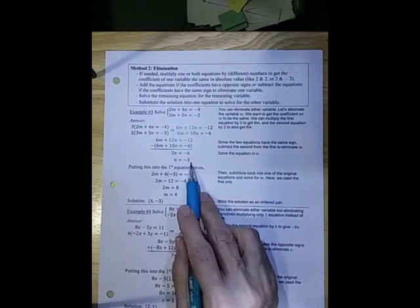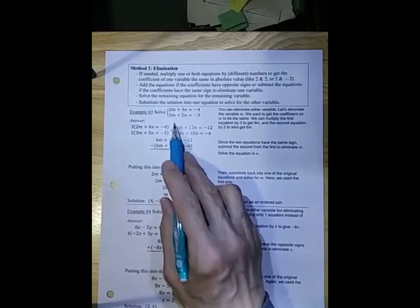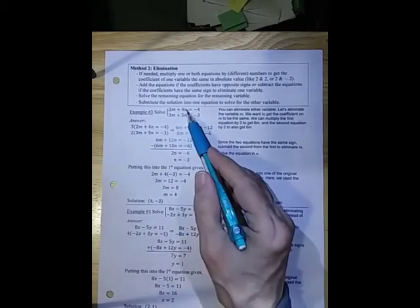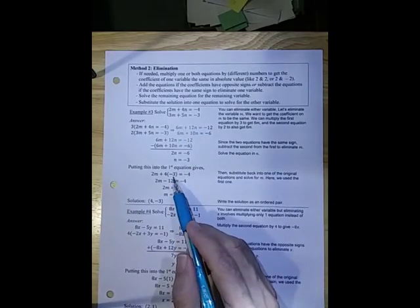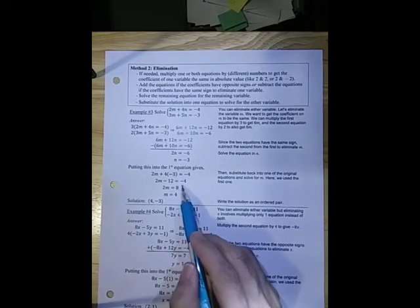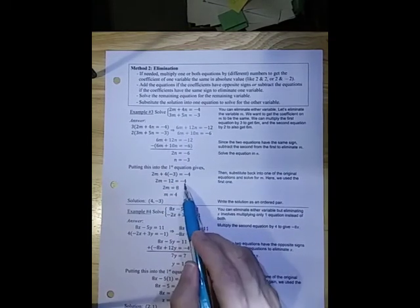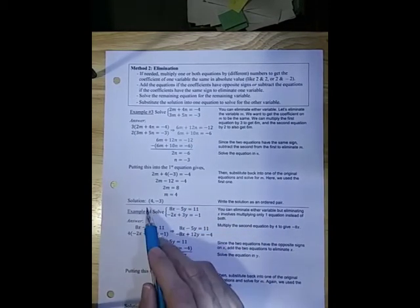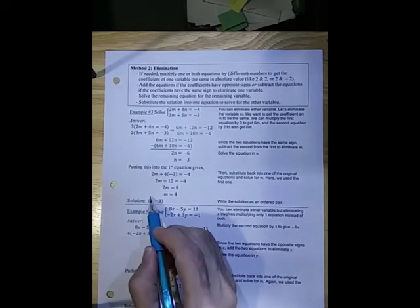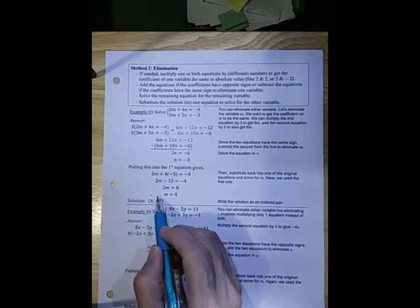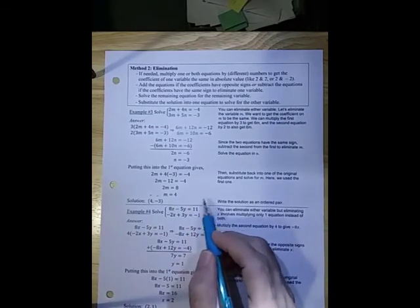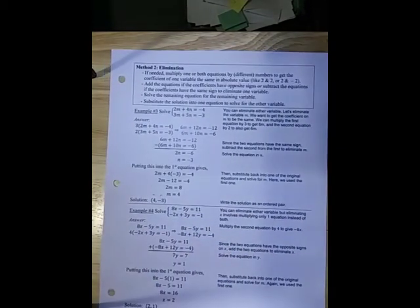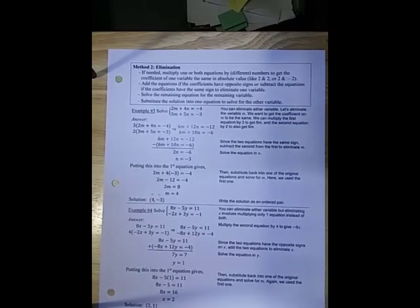Now that you have n equals minus 3, pick either equation and solve for it. If I put the first one, I'm going to put n is equal to minus 3 in that equation. That gave me 2m minus 12 is minus 4, so I add 12, 2m is equal to 8, divide by 2, m is equal to 4. And then how do you know which order to put? We always put them in alphabetical order, m, n. So typically it's x, y, but if you have two other variables, they're going to go in alphabetical order. m will come first, n will come second in the ordered pair.